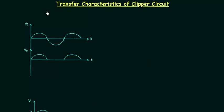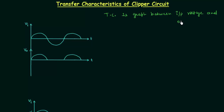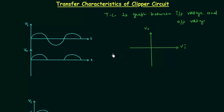In this lecture I will explain what is transfer characteristics and how to obtain transfer characteristics of a clipper circuit. Transfer characteristics is a graph between input voltage and output voltage. This is the formal definition of transfer characteristics. In this graph, the X axis represents the input voltage and the Y axis represents the output voltage.